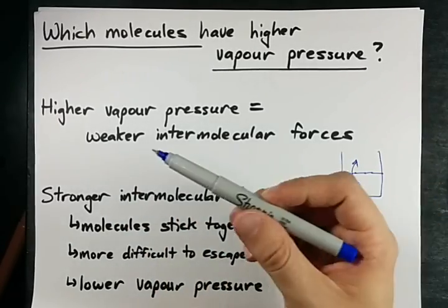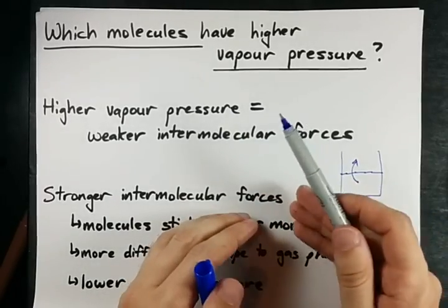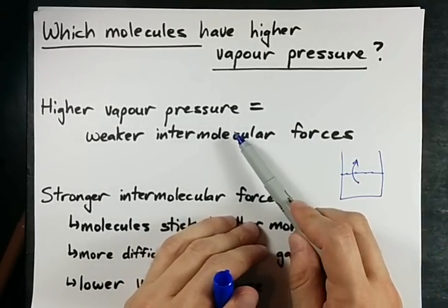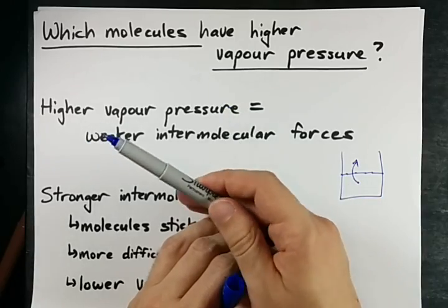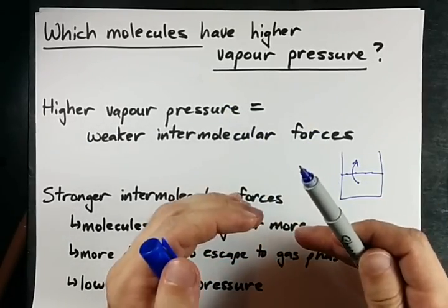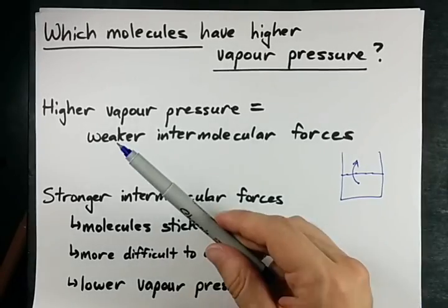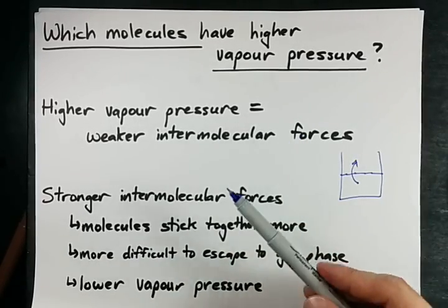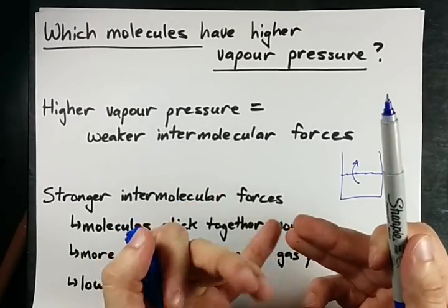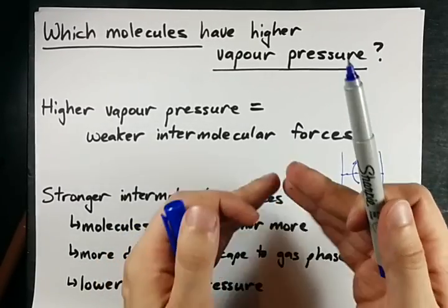Remember, hydrogen bonding and ion-dipole forces are the strongest of these. Dipole-dipole is kind of a middle-strength intermolecular force, and London dispersion forces — those ones that come up when there's no polarity or hydrogen bonding — are the weakest.